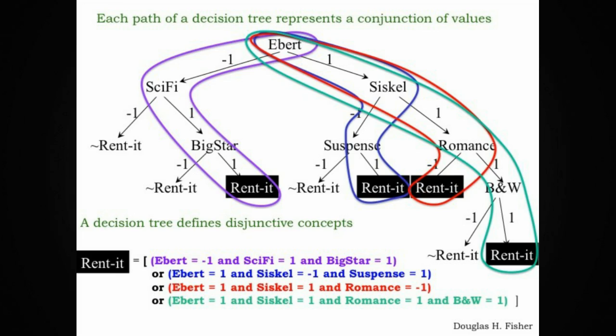Each path in a decision tree, and I've highlighted four here, represents a conjunction of conditions. The four paths that I've highlighted here are all paths that end in a leaf labeled rented. So each path represents a conjunction of conditions in which rented is true. For example, I've highlighted one path in purple. This path claims that one would rent it if Ebert gave a thumbs down, it was a sci-fi, and the movie included a big star.